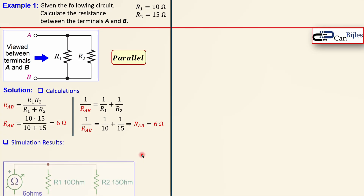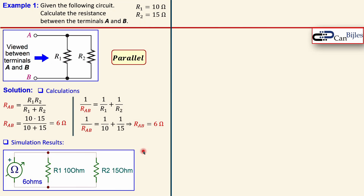The simulation result shows the circuit in the SPICE simulator with the 10 ohm and 15 ohm resistors and the ohmmeter, which indeed reads 6 ohms effectively — also verified.